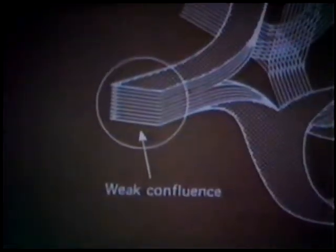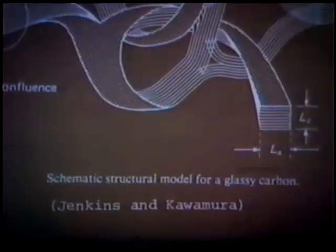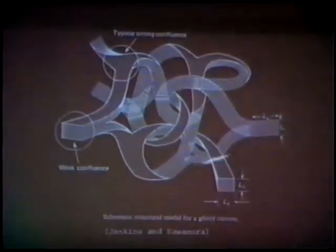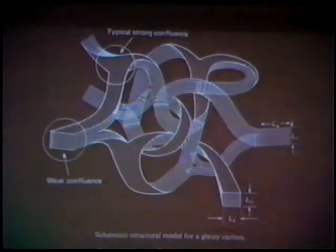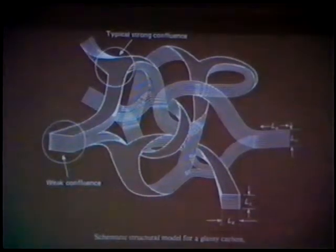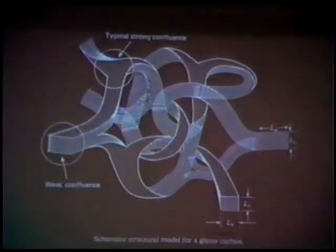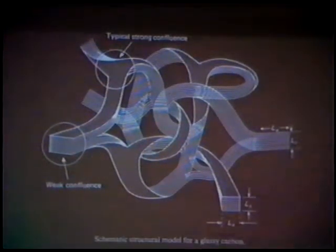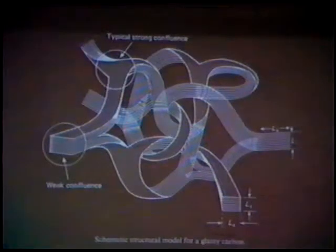Various models have been proposed for this type of structure. For example, the model due to Jenkins and Calamura: essentially what you have in a carbon is a tangled network of carbon layer planes, which are highly defective, with hetero-elements incorporated in the structure, probably on the periphery of the layer planes. There are small, near-parallel stacks, perhaps only two or three layers high, with variable interlayer spacing, and it's the interlayer spacing between these disordered carbon layer planes which forms the micropores in these materials.